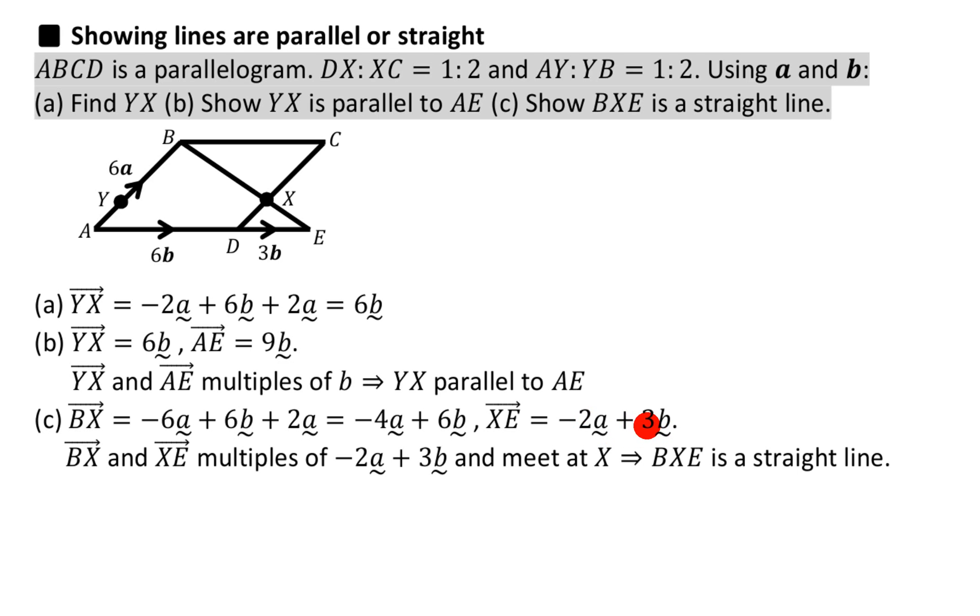Now just to round this off, to make it really clear: both these lines, BX and XE, are both multiples of this vector, minus 2a plus 3b. Now one of them happened to be minus 2a plus 3b, but it can happen that you've got a compound vector...